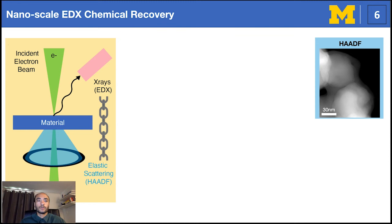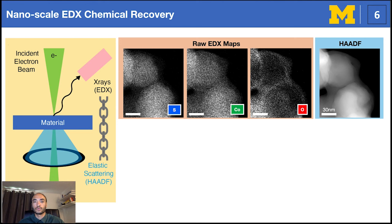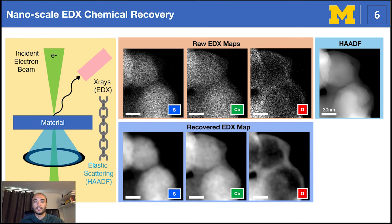Returning to the cobalt sulfide nanoparticle, we see the cobalt, sulfur, and oxygen chemical maps suggest the presence of an oxidized shell surrounding a cobalt sulfide core at a significantly lower signal-to-noise ratio than the HAADF. However, fused multimodal electron microscopy effectively links the EDX and HAADF micrographs, thus efficiently removing the shot noise and brings the chemical maps to a similar noise level as the HAADF. Fused multimodal electron microscopy successfully recovered the nanoscale chemistry for catalyst materials, as we clearly see from the EDX overlay.